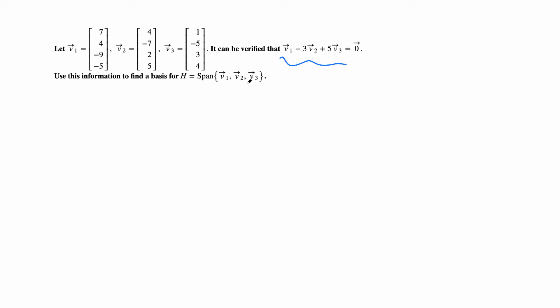In these three vectors, we need only two to find the basis. So a basis for H, which is the span of these three, is just v1 and v2, provided they are linearly independent.